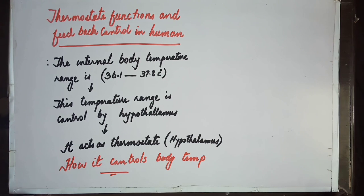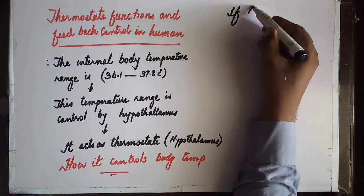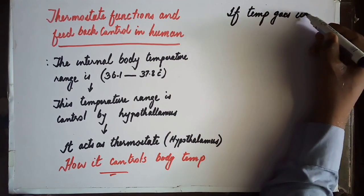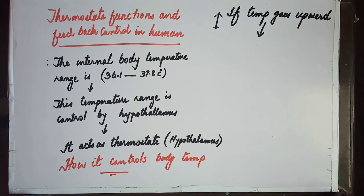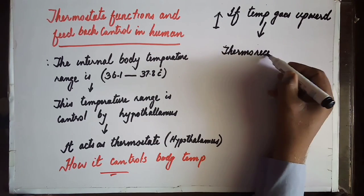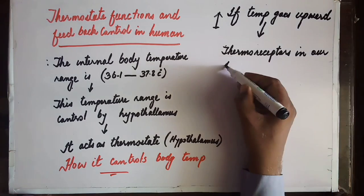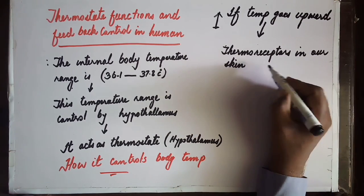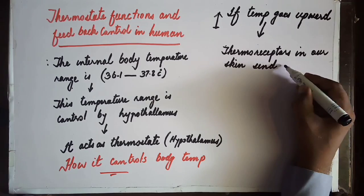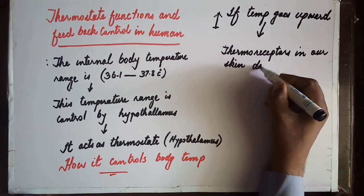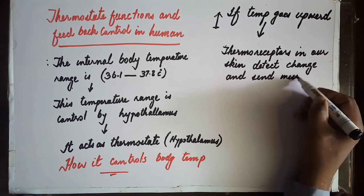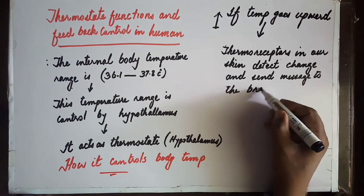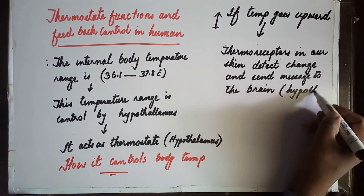We will now see how it controls body temperature under two conditions. The first condition we will discuss is: if the temperature goes upward — above this range — how will the hypothalamus manage it? Thermoreceptors in our skin detect the change first, and then send the message to the brain, i.e., to the hypothalamus.